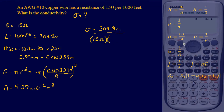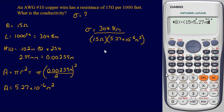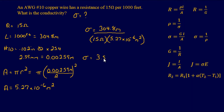Multiplying by the area of 5.27×10⁻⁶ meters squared and plugging that into our calculator gives a final answer of 3.86×10⁶ Siemens per meter. That is our final answer.